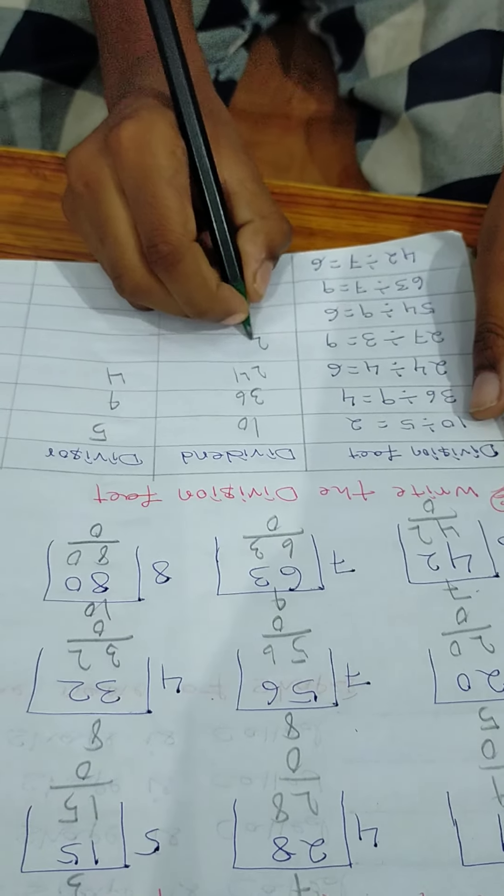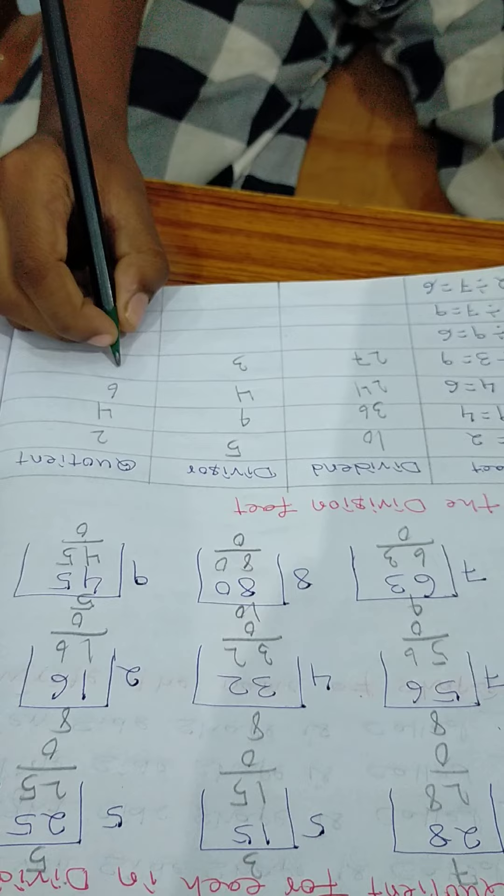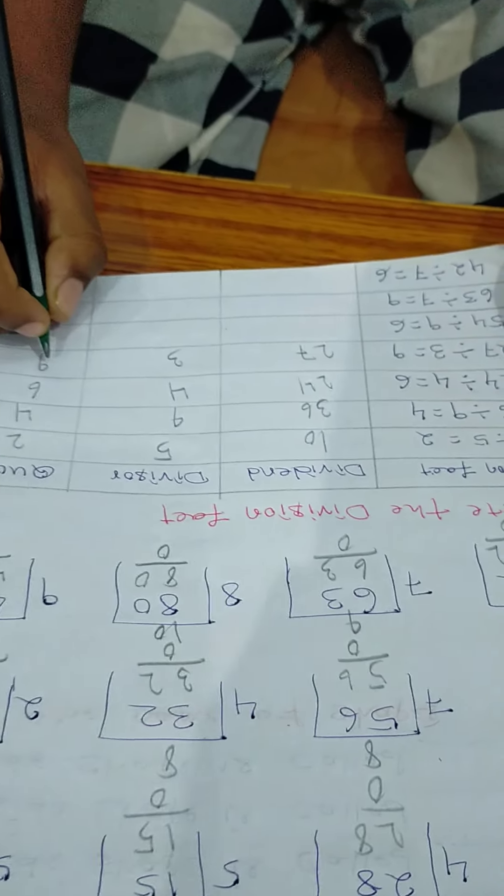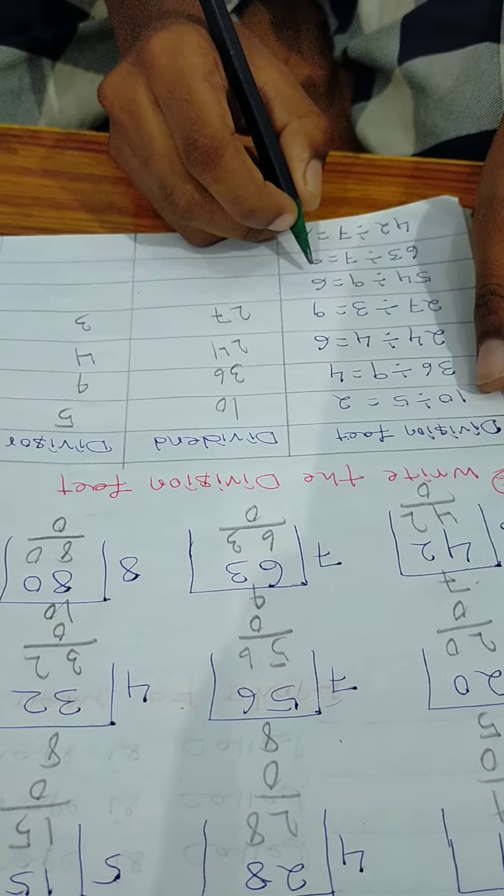27 divided 6. 27 divided 3 is equal to 9. Dividend is 27. Divisor is 3. Quotient is 9.